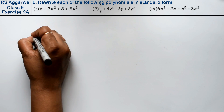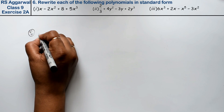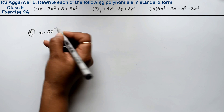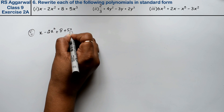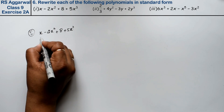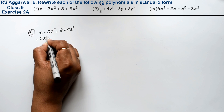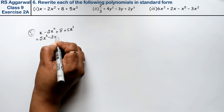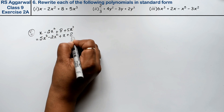The first part is: x minus 2x square plus 8 plus 5x cube. This is the biggest degree term: 5x cube. So in standard form, the answer is 5x cube minus 2x square plus x plus 8.